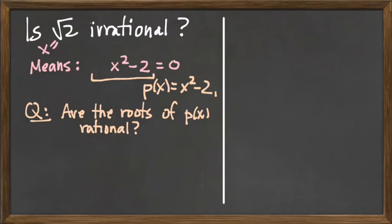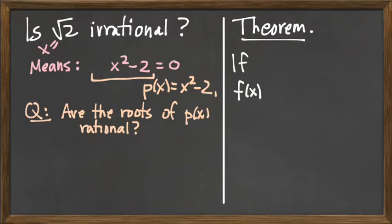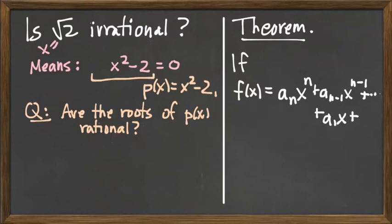So here's where the rational roots theorem can help us. The rational roots theorem begins with a polynomial having rational coefficients. I'm just going to write down a polynomial having rational numbers as its coefficients: a_n x^n + a_{n-1} x^{n-1} + ... + a_1 x + a_0, where all of these a_0 through a_n are rational numbers.